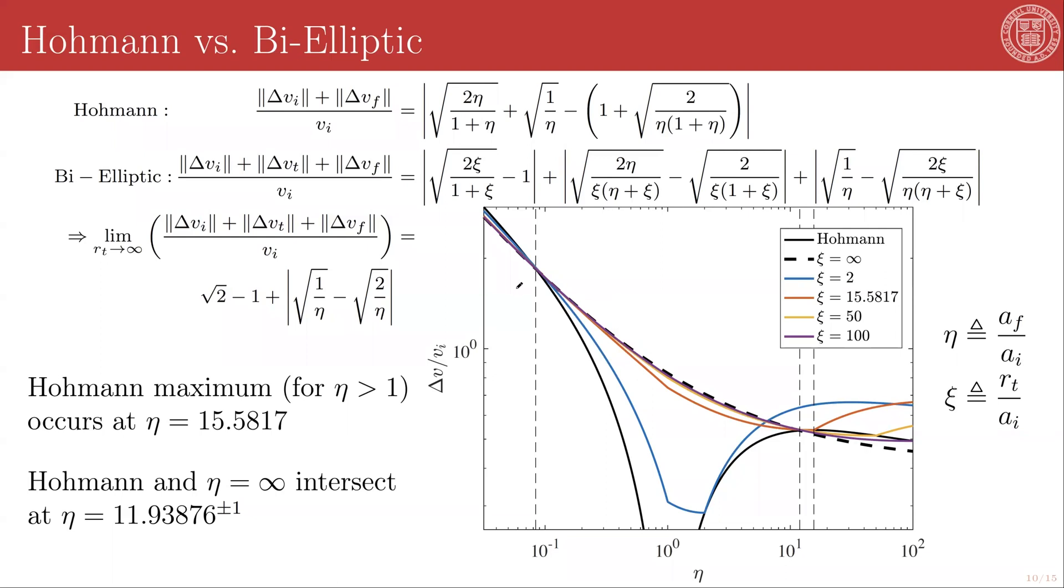The last thing to note here is that you don't get anything for free. When you switch to the bi-elliptic transfer, what you're trading is required delta V for time. To be more efficient than the equivalent Hohmann transfer, the bi-elliptic transfer has to take more time because you're going out to some distant point in space and coming back. So in cases where you are incredibly fuel-limited and can afford to wait, and if your spacecraft has the required survivability, then it's okay to go with a bi-elliptic transfer. If you're trying to get somewhere fast, then the Hohmann transfer is your best bet.